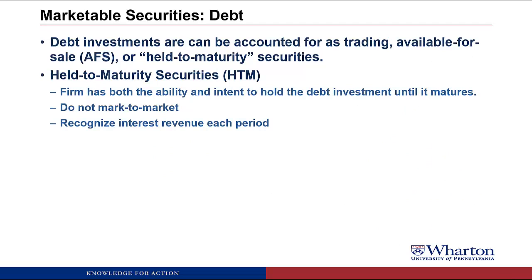Now let's talk about marketable securities that are debt securities — when you're buying the bonds of another company. Debt investments can be accounted for as trading and available for sale, using the same methods we've seen so far. Or they can be done under a third method called held to maturity. Under held to maturity, or HTM, the firm has to have both the ability and the intent to hold the debt investment until it matures. So if it's a five-year bond that you buy, you have the intent and ability to hold it for five years until the bond matures. Under this method we do not mark to market, and we recognize interest revenue each period.